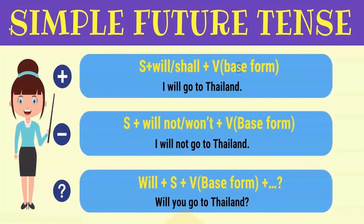Now let's see how to change an affirmative sentence into negative and interrogative. The plus sign means affirmative or positive sentence. For affirmative: subject plus 'will' or 'shall' plus the base form of the verb. Remember, 'shall' can be used with 'I' or 'we.' For example: 'I will go to Thailand' — 'I' is the subject, 'will' is the helping verb, and 'go' is the root form of the verb.